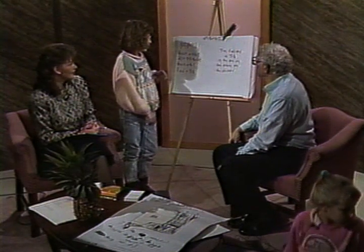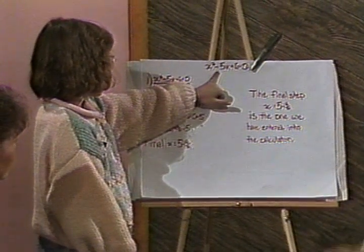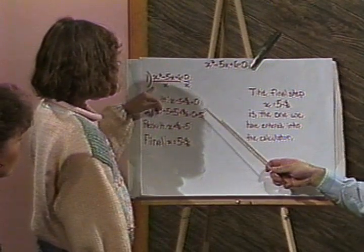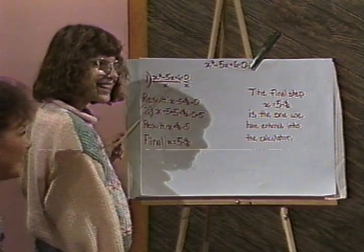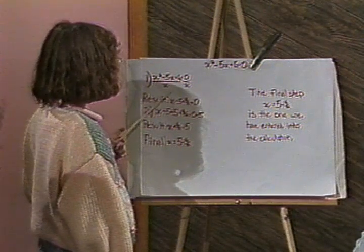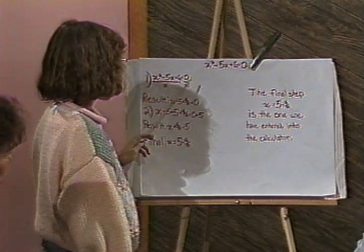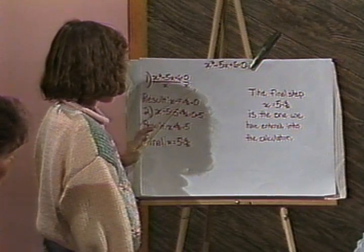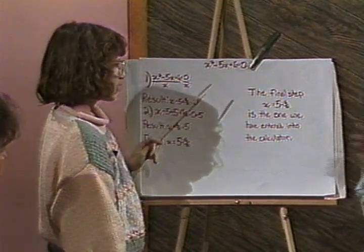This is just a quadratic equation. The equation is x squared minus 5x plus 6 equals 0, and the two roots — the two answers — are 3 and 2.